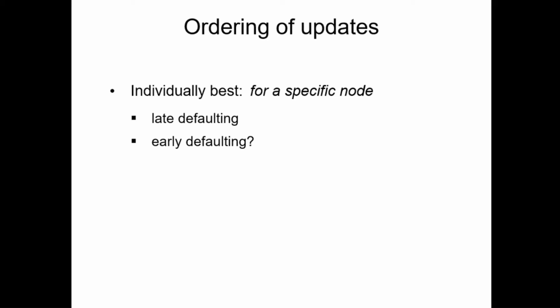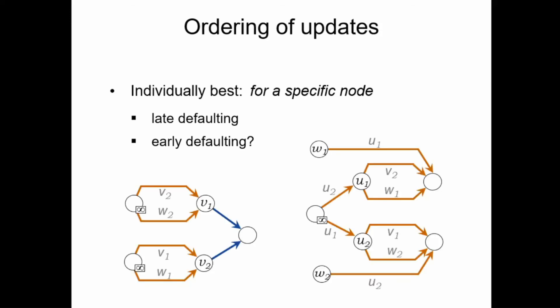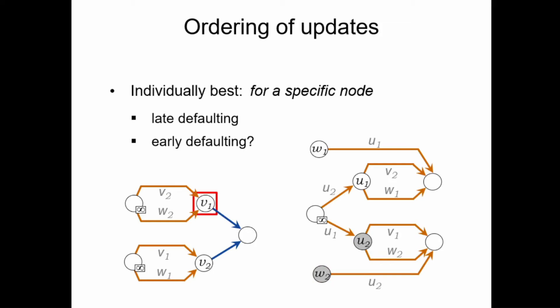What's much more surprising is that early defaulting can also be a good idea in some cases. One can construct a system where the only way that a node can avoid the default in the final state is if this node is the first one to announce the default. The main idea is that you can have a system where nodes V1 and V2 can report the default initially, and if V1 is the first to do so, this ensures that the defaults in another part of the system happen in a specific way. These defaults then provide new assets and liabilities to the first part of the system that bring V1 back from the default and push V2 into default instead. If V2 were the first to report the default, the opposite outcome occurs where V2 survives and V1 is in default.